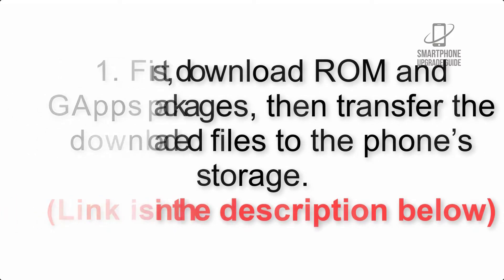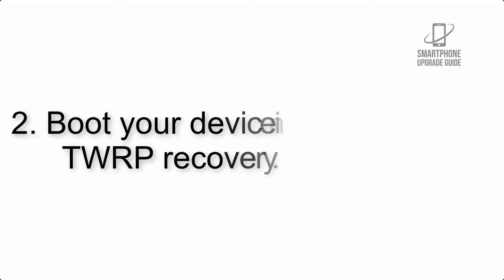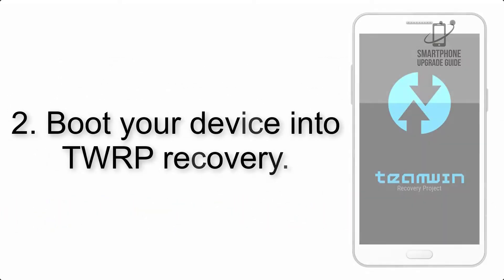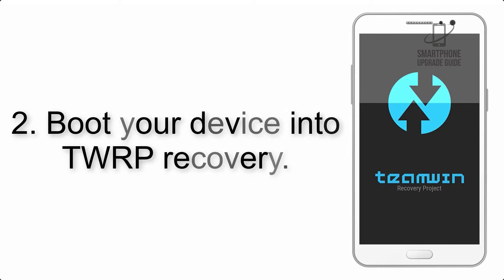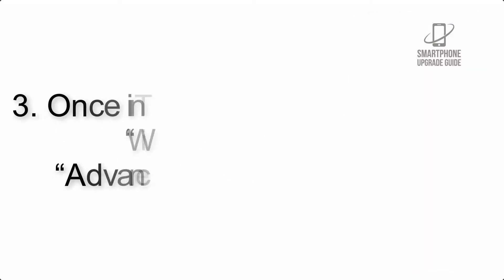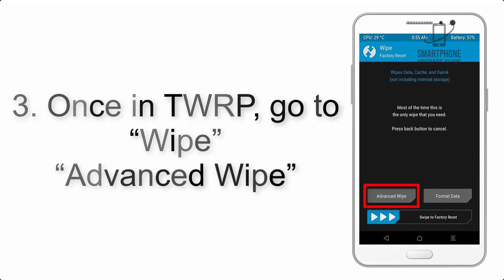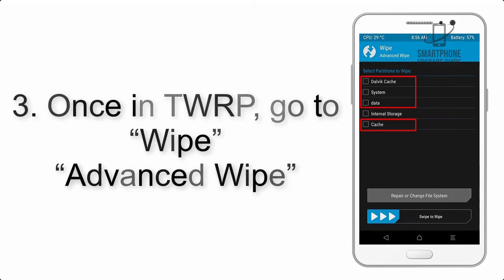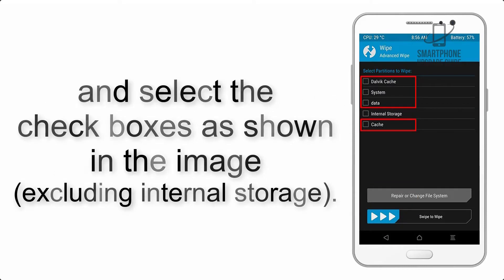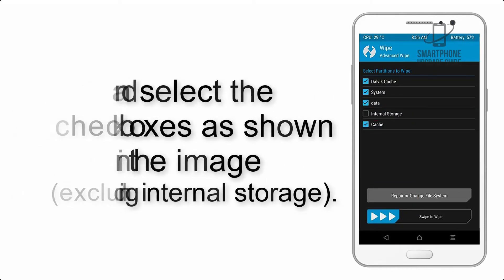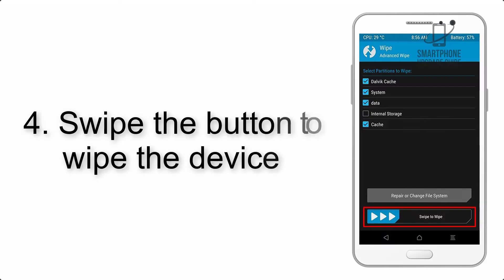Step 2: Boot your device into TWRP recovery. Once in TWRP, click on Advanced Wipe and select the checkboxes as shown in the image, excluding internal storage.